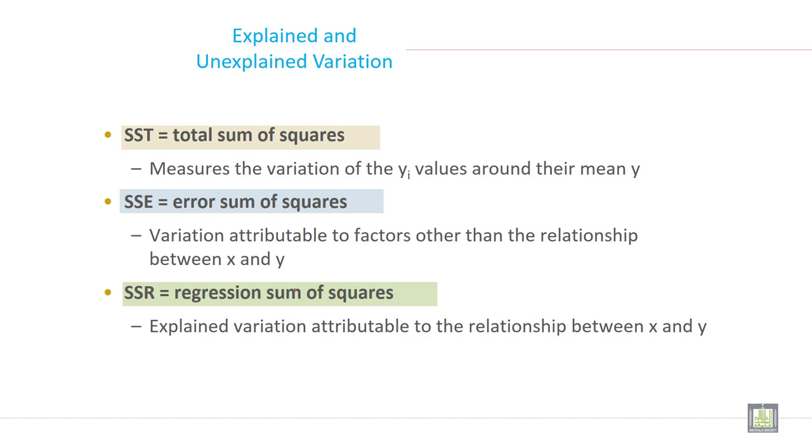SSR, regression sum of square, is explained variation attributable to the relationship between x and y.